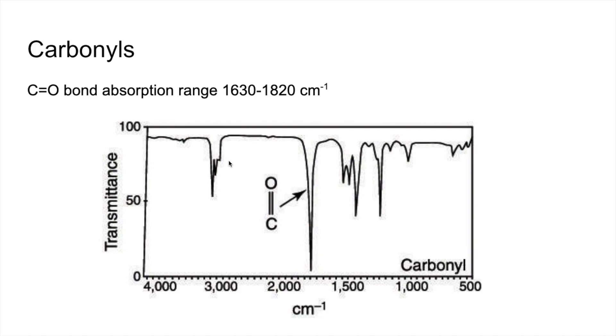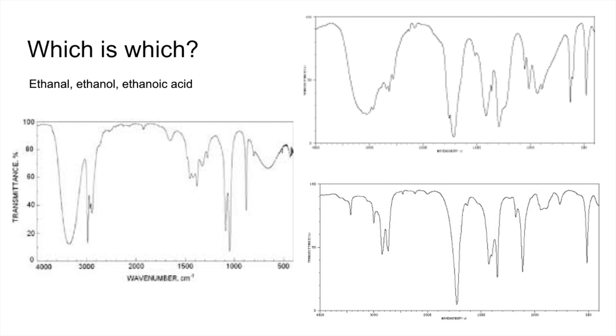I would always advise students to look at around about the 3000 and above region and just make some kind of comment on what we've got. So they're obviously your CHs there, we haven't got an OH, we haven't got anything broad going on in this region, and so this molecule does not have an OH, these are just CHs. That's worth making that point. So check that's all made sense, we'll just do a quick analysis of these three infrared spectra.